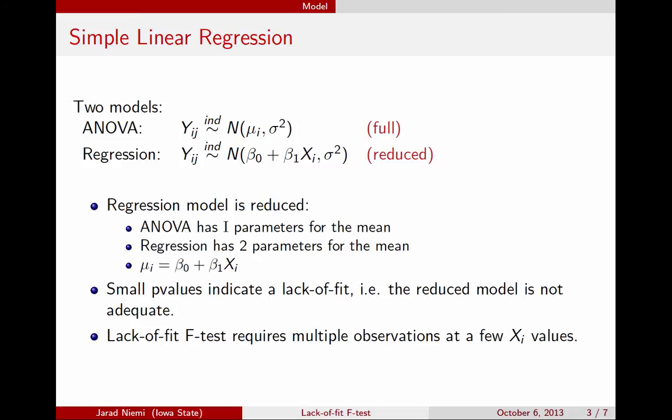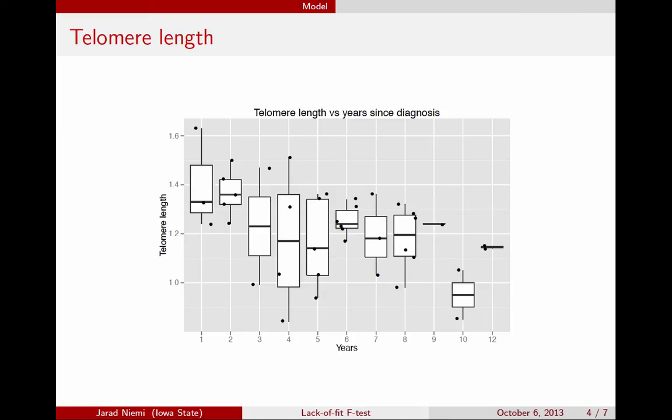Let's look at an example. Here's an example that we looked at in the Simple Linear Regression mini-lecture. This is individuals who have been diagnosed with a disease. We're looking at the number of years since they've been diagnosed on the x-axis and their telomere length on the y-axis. The telomere is part of the chromosome, it's the end of the chromosome. And it appears that as the years progress, that on average, the telomere length decreases.